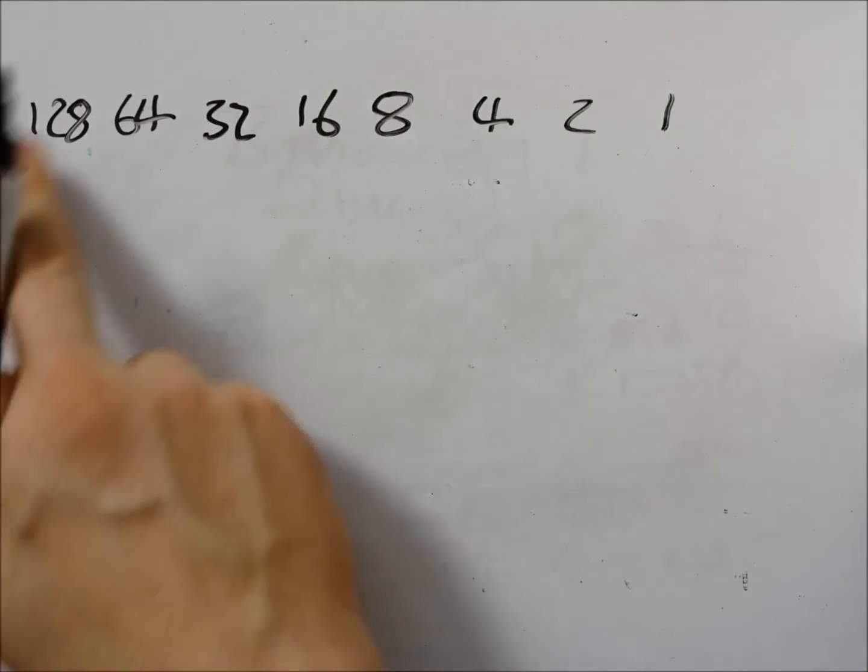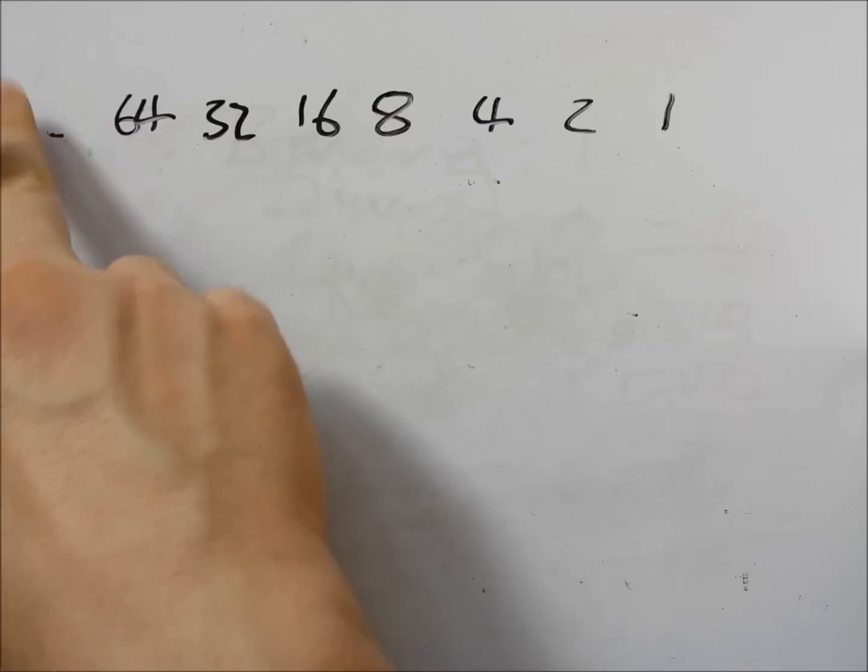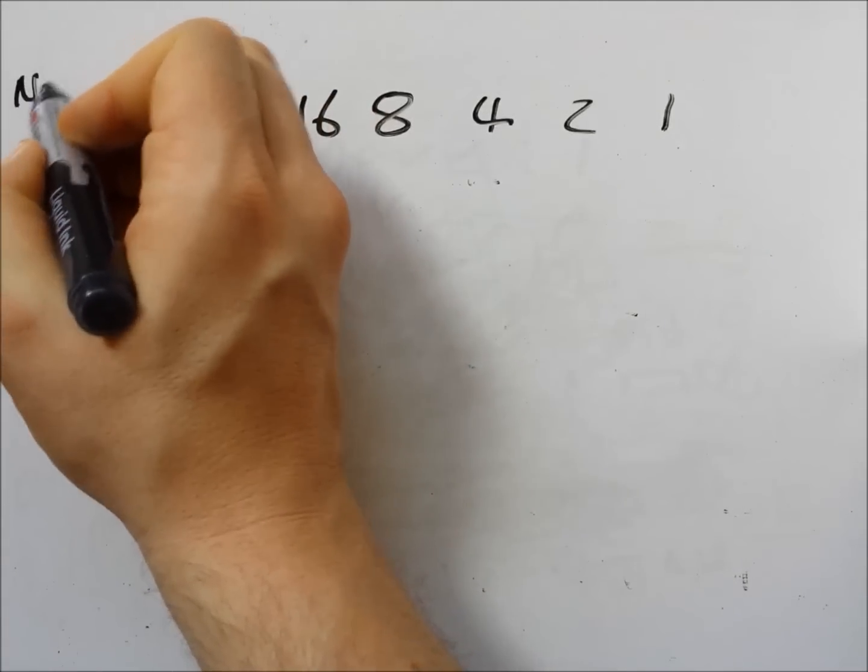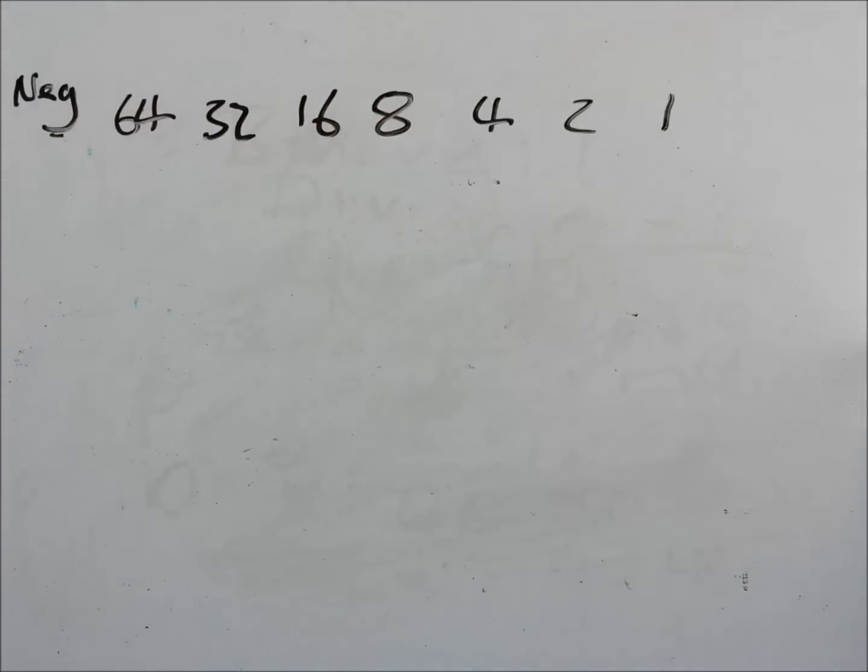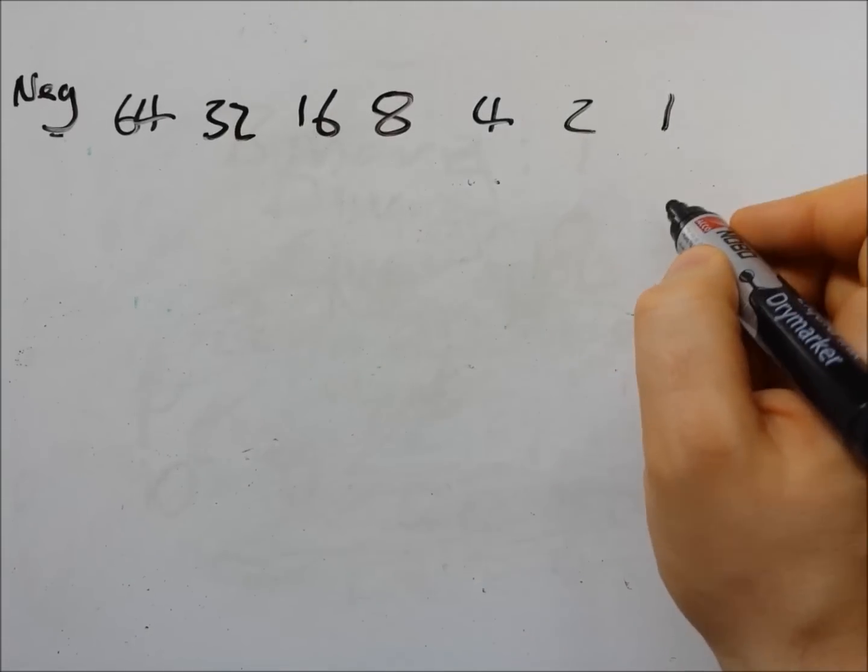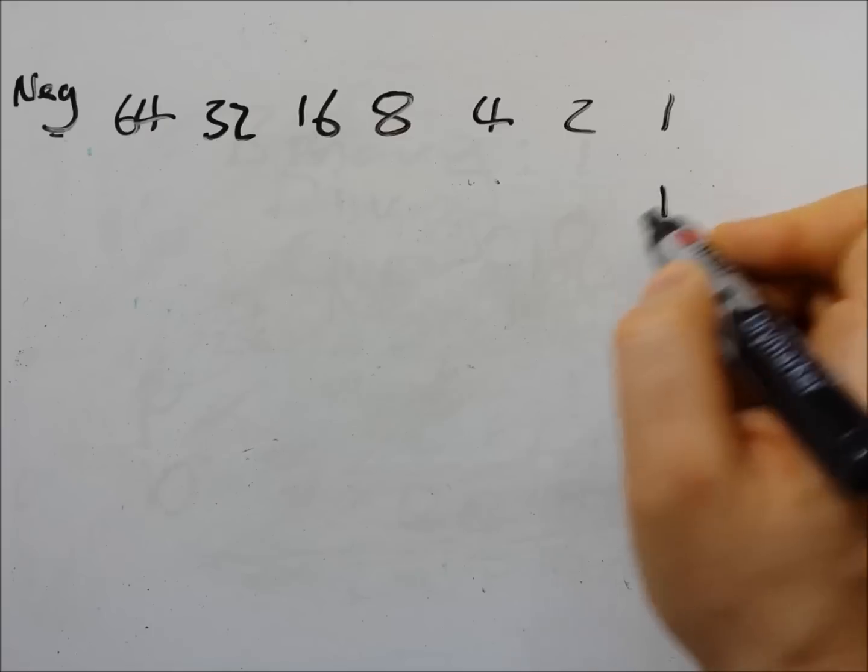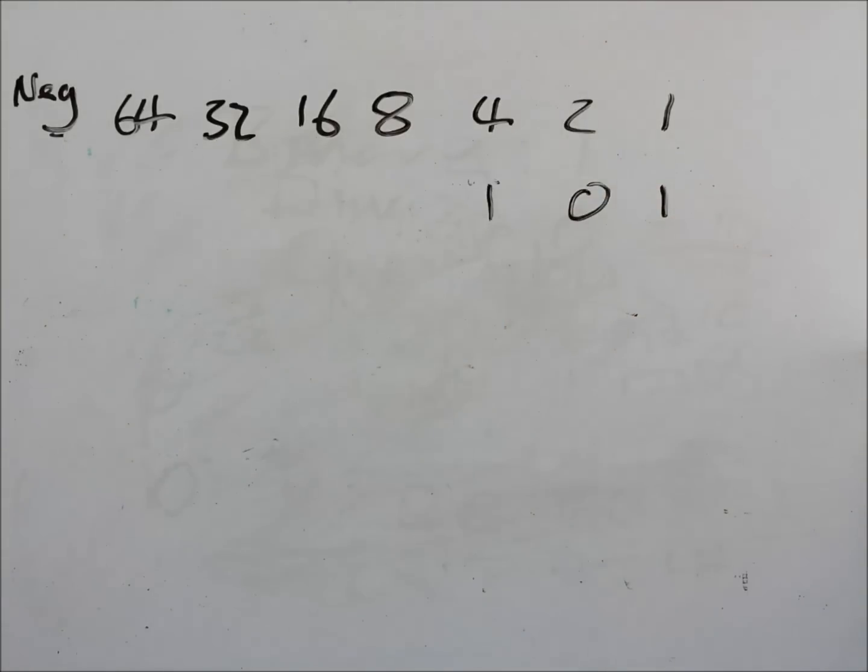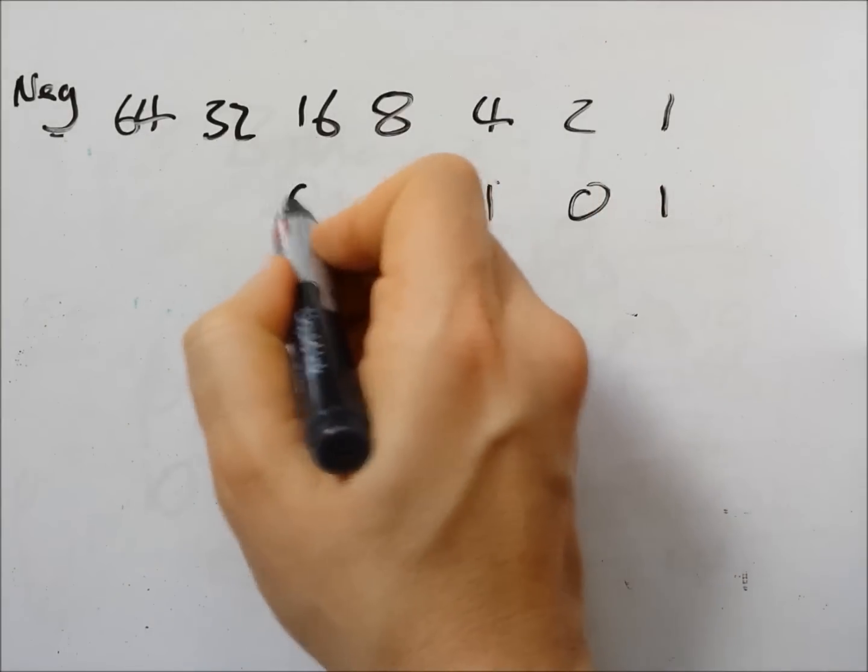Instead of having 128 I make this negative or I could make it positive. It doesn't matter which. So what we've got is we've got a number which might be 101. Fill in the missing zeros.